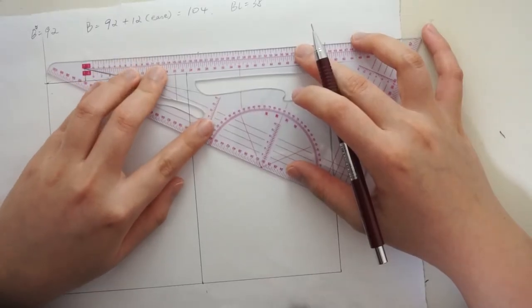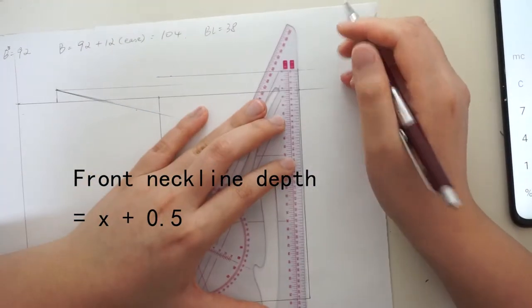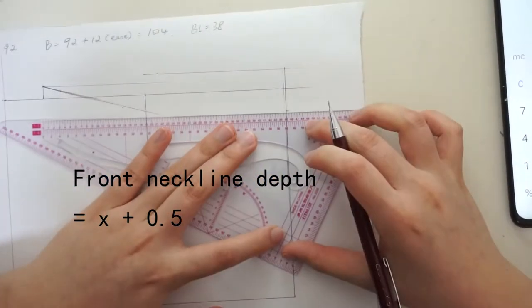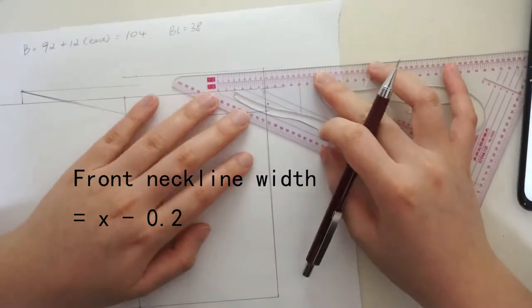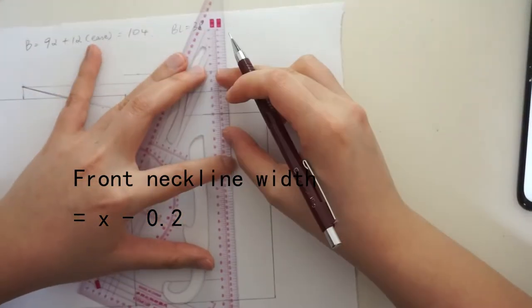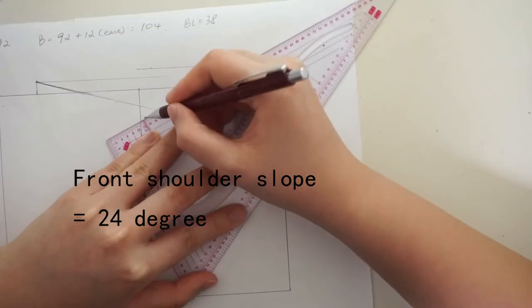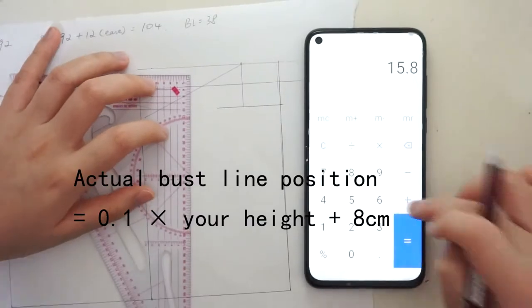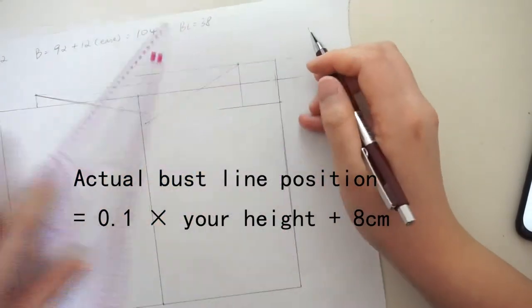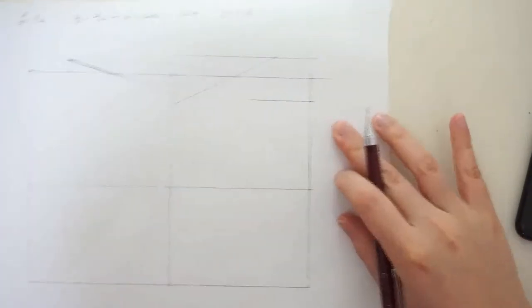Elongate this line to the center front and we will start constructing the front neckline. The depth is x plus 0.5. Draw a horizontal line there. And the width is x minus 0.2. Draw a perpendicular line and we have the frame for our front neckline. Now draw the front shoulder seam, which is 24 degrees from the horizontal line. And we'll find the bust line. It is 0.1 times your height plus 8cm from the top of your neckline.